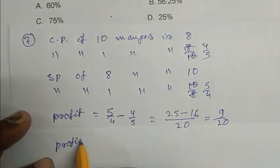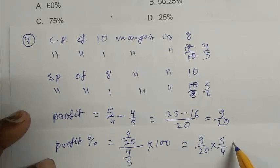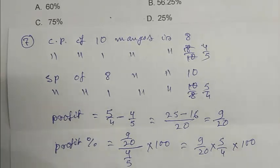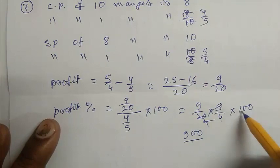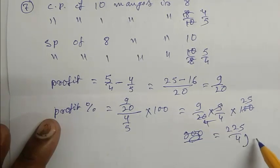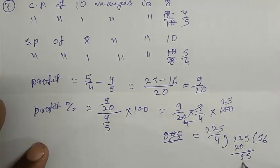So profit percentage is profit is 9 by 20 by CP that is 4 by 5 into 100. It is become 9 by 20, 5 by 4 into 100. It is become 9 by 20, sorry 25, it's become 225 by 4.